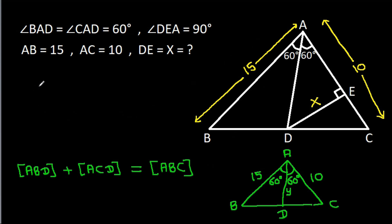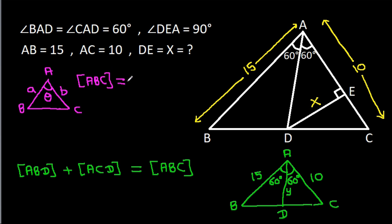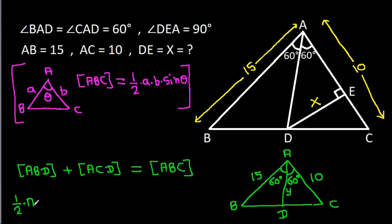In triangle ABC, if AB is A, AC is B, and the included angle is theta, then the area of ABC equals one-half times A times B times sin theta. So the area of ABD will be one-half times AB times AD times sin 60 degrees.